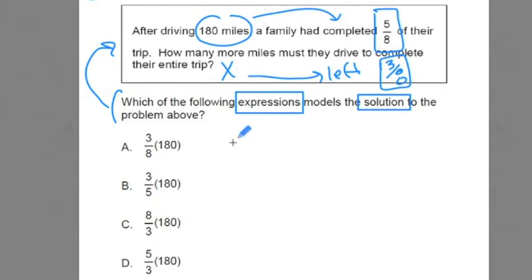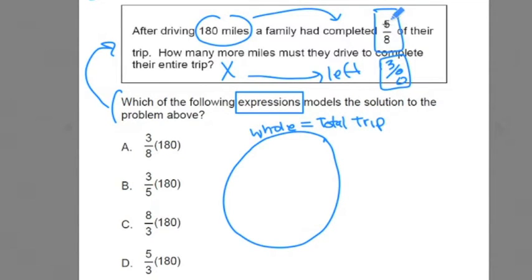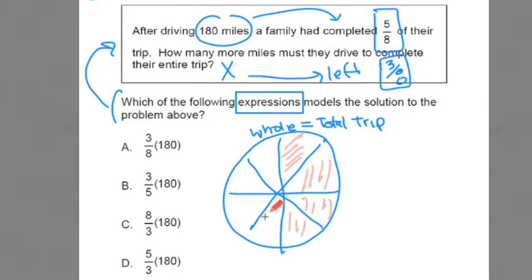To do this problem, what I'm going to do is, since I see fractions, I'm going to try and use some part to whole stuff that we've used in the past. Let's say right now the whole is a total trip. Now we're told that this whole can be divided into 8 sections, is that right? So let's do that right now. Let's divide this into 8 pizza slices here. It tells us that 5 eighths are completed. So I'm going to do 1, 2, 3, 4, 5.